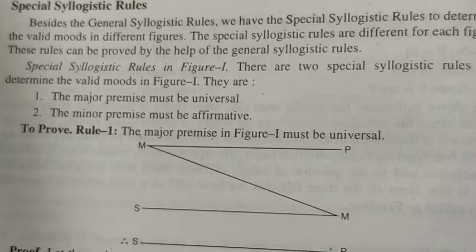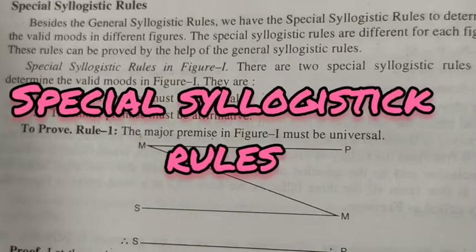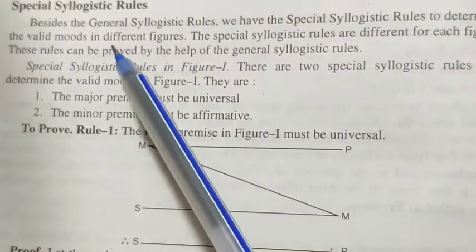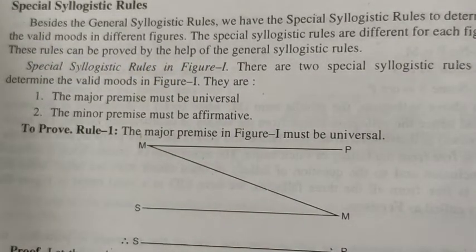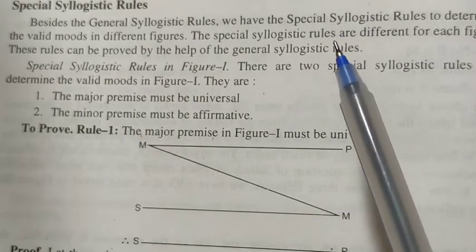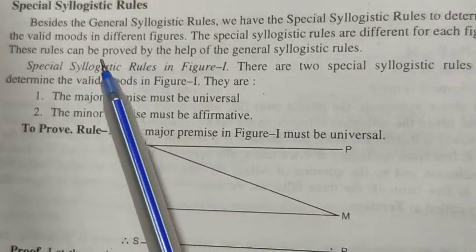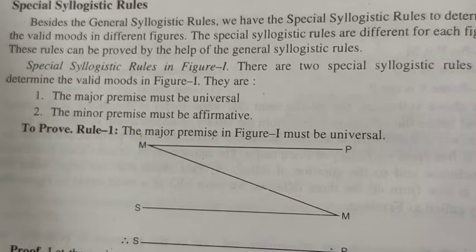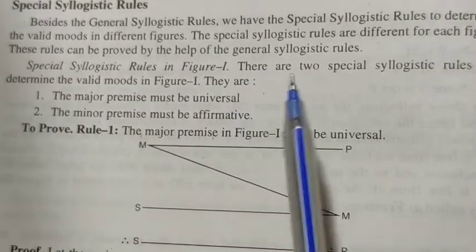Let's discuss special syllogistic rules. Besides the general syllogistic rules, we have special syllogistic rules to determine the valid modes in different figures. The special syllogistic rules are different for each figure. These rules can be proved with the help of the 10 general syllogistic rules.